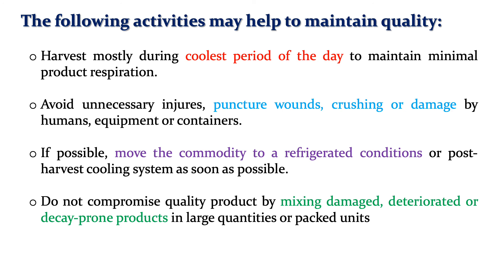Do not compromise on product quality by mixing damaged, deteriorated, or decay-prone products in a large packed unit, because some people add deteriorated product to increase quantity or fetch higher prices in the market. We should not compromise on quality because in today's fast-paced world, people demand more qualitative and attractive products. These activities can reduce losses and maintain product quality. In today's video, we covered what post-harvest losses are, how the losses occur, the various reasons behind post-harvest losses from harvesting to consumption, the different environmental factors influencing deterioration, and which activities should be done to reduce these losses.